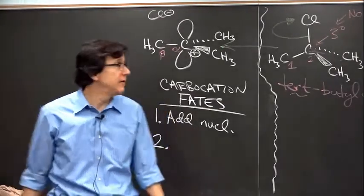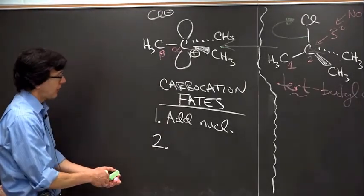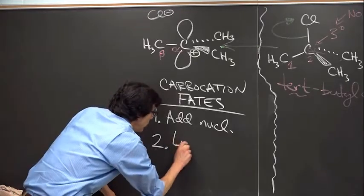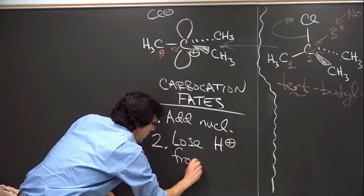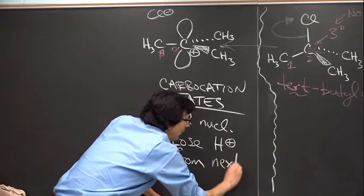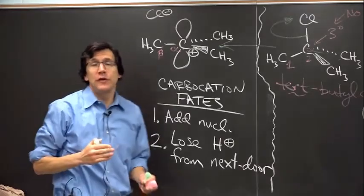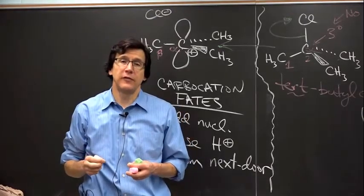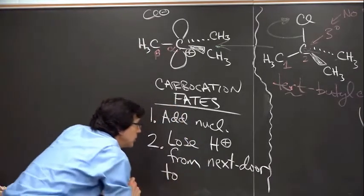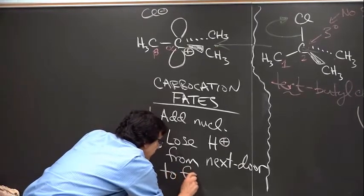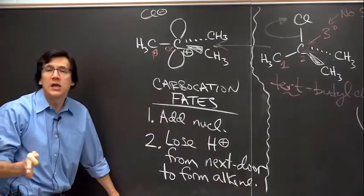And we said elimination involves loss of a leaving group from the alpha carbon and loss of a proton from the beta carbon to put a double bond in between alpha and beta. So we've gone part way. We've gotten to this carbocation. The second carbocation fate, then, might be described in the following way. Lose H plus from next door. So if you're alpha, the next door position is beta. So can you do this? Can you show the loss of H plus from the beta carbon? And we're going to make a double bond.